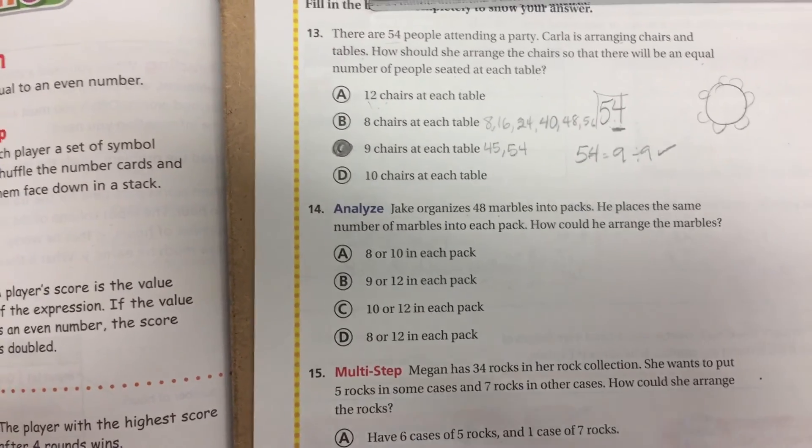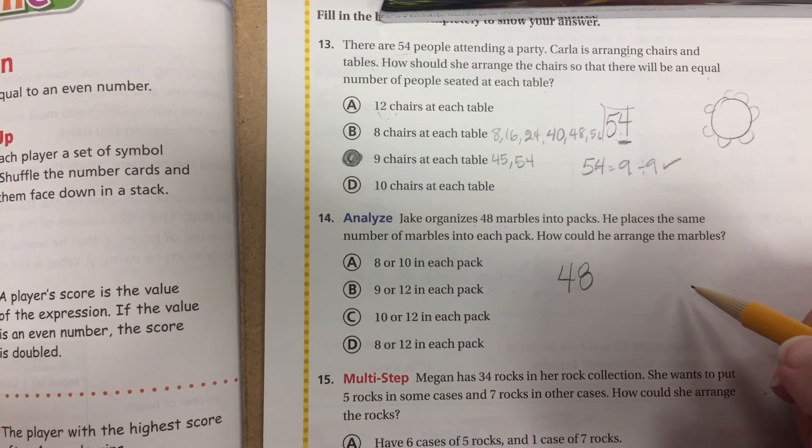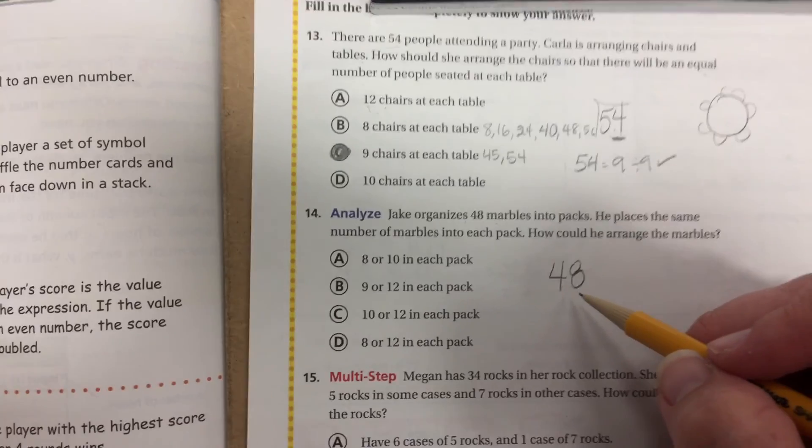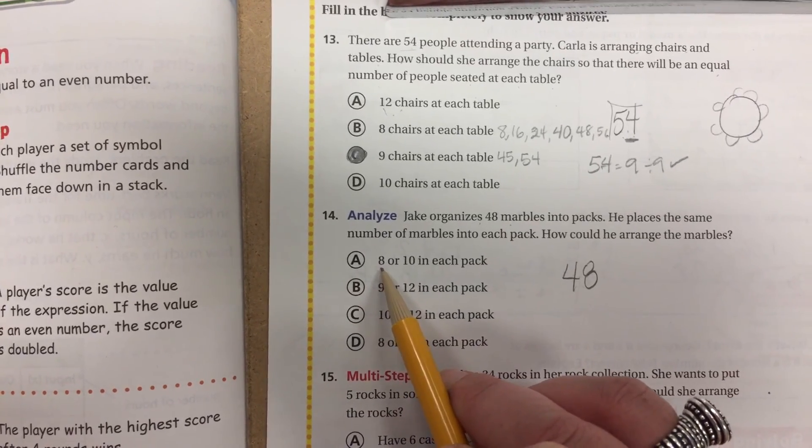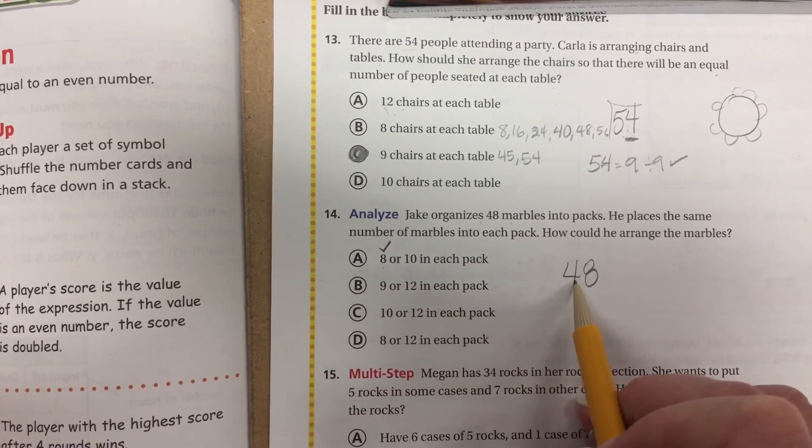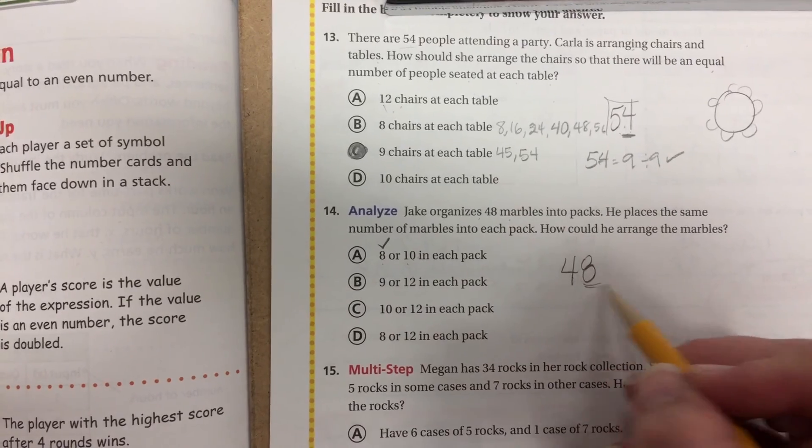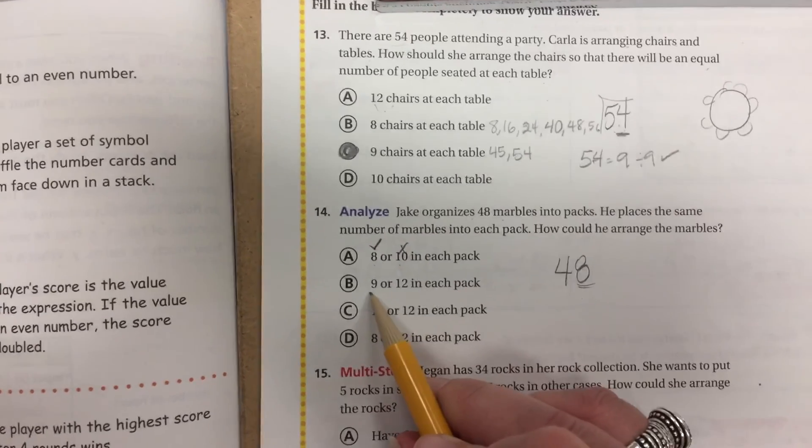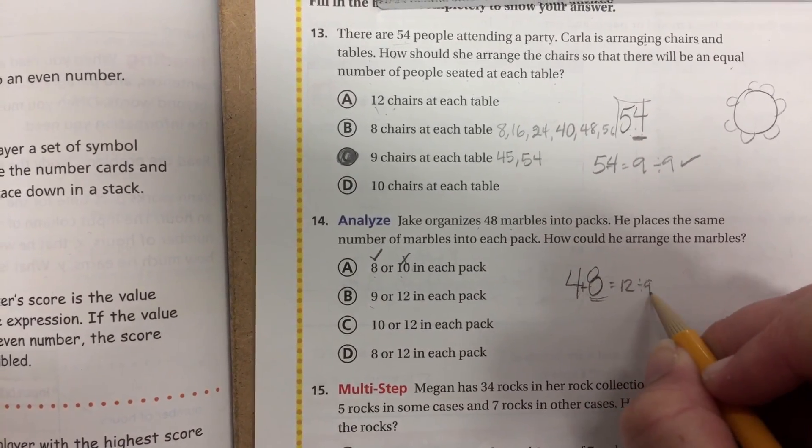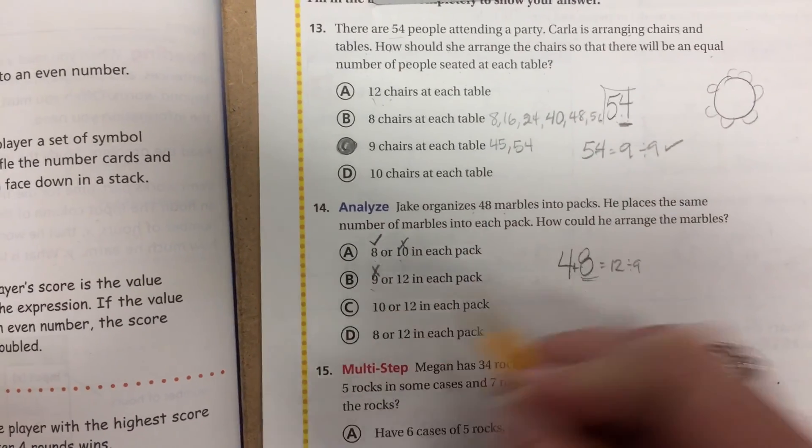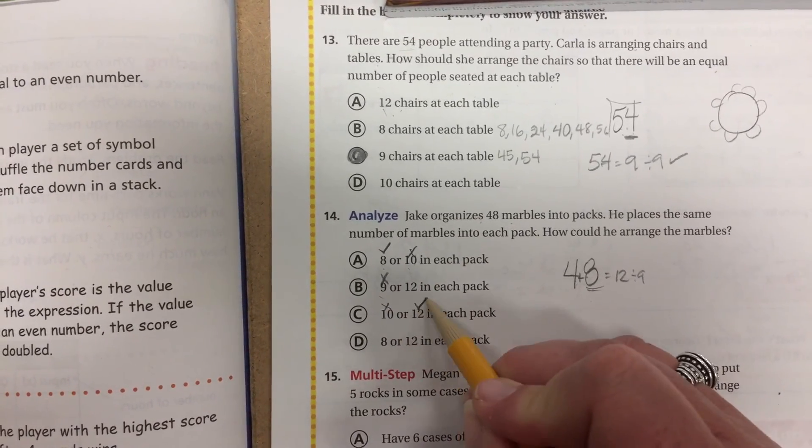Number 14. Jake organizes 48 marbles into packs. He places the same number of marbles into each pack. How could he arrange the marbles? So, again, over here, I'm trying to figure out, is 48 divisible by 8? Can I put them in piles of 8? Yeah. 6 in each pile. Can I divide 48 into groups of 10? In other words, is this divisible by 10? No, because it ends in 8. 48 divisible by 9. Well, my 9 rule is adding the digits. 4 plus 8 is 12. Is 12 divisible by 9? No, it's not. I'm done. Is 48 divisible by 10? Nope. Is it divisible by 12? Yep. 4 times.